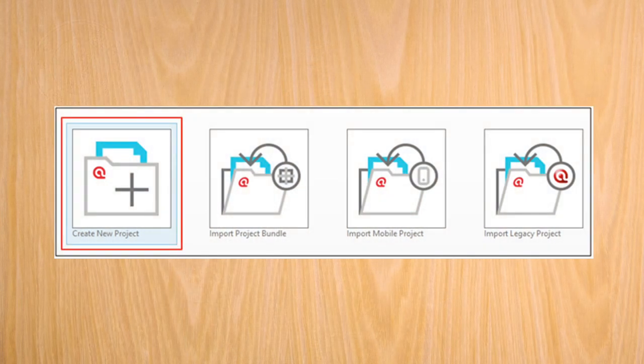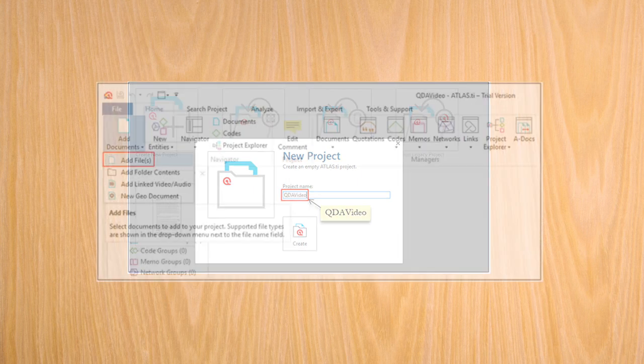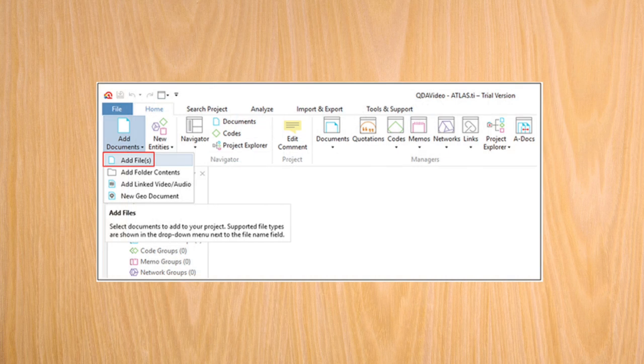In Atlas TI, the first step is to create a project. I am going to name this project as QDA video, but you are free to choose any other name. Having created the project, I am going to import the text document containing the interview transcript that is to be analyzed.